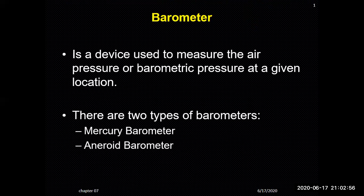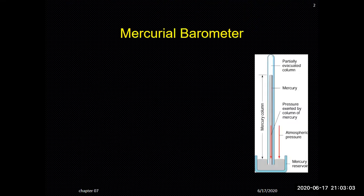There are two types of barometers: the mercury barometer and the aneroid barometer. In the mercury barometer, mercury is filled inside a tube. Atmospheric pressure acts on the surface of the mercury and pushes it to rise up to a certain height. This height of the mercury column represents the pressure exerted, while the upper surface of the column is partially evacuated.